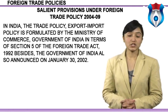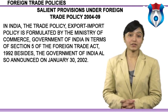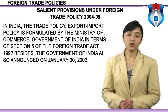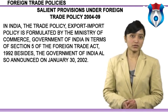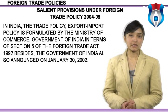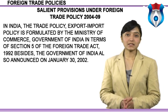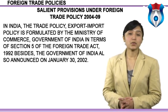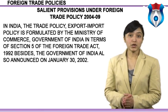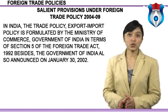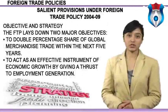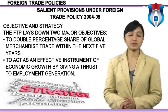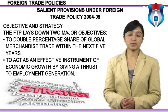The Government of India announced on January 30, 2002, a medium-term export strategy to guide the formulation of the export-import policy 2002 to 2007, with the objective of achieving a share of 1% in world trade by the end of 2006-2007, from the present share of 0.6% in 2000-2001. The present export-import policy was announced on 31st March 2002 for a period of five years, with effect from 1st April 2002 to 31st March 2007, co-terminus with the 10th Five-Year Plan. The FTP lays down two major objectives: to double the percentage share of global merchandise trade within the next five years, and to act as an effective instrument of economic growth by giving a thrust to employment generation.